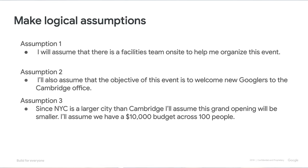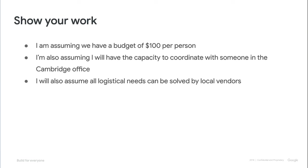Here are some of the assumptions Kelsey would make. Assumption one: there is a facilities team on site to help organize this event. Assumption two: the objective of this event is to welcome new Googlers to the Cambridge office. Assumption three: since New York City is a larger city than Cambridge, this grand opening will be smaller, with a $10,000 budget across 100 people — $100 per person. She also assumes she'll have the capacity to coordinate with someone in the Cambridge office and that all logistical needs can be solved by local vendors.